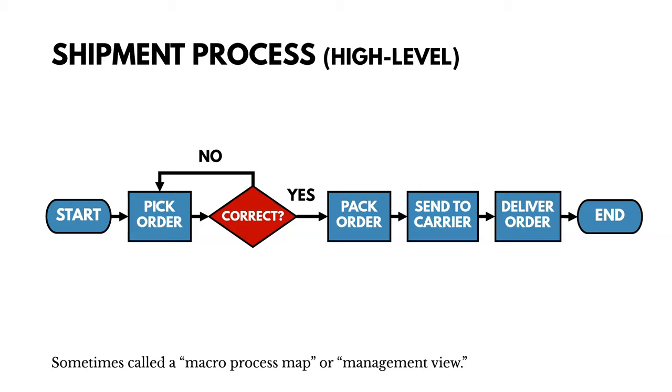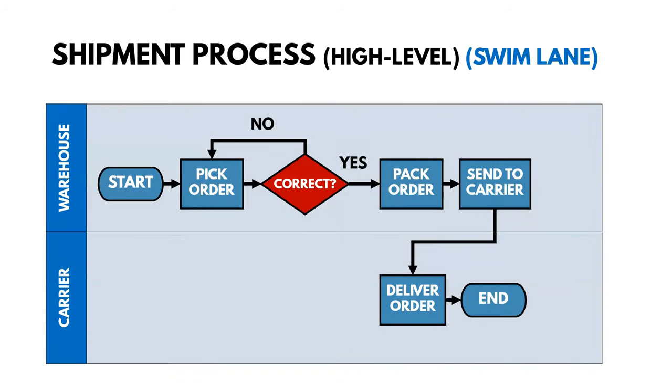Now, what you don't see in this particular view is who does what. And that's where a swim lane, another version of this process flow diagram, comes in handy. And so what you're going to see on the left-hand side in this case are different groups or parties involved in the process. So the top swim lane represents the warehouse, activities they perform, and the bottom lane represents the carrier, activities that the carrier performs, like UPS or FedEx.